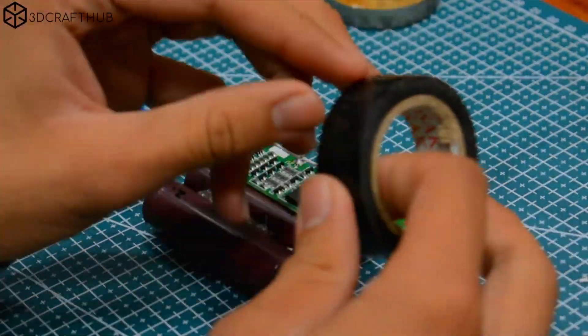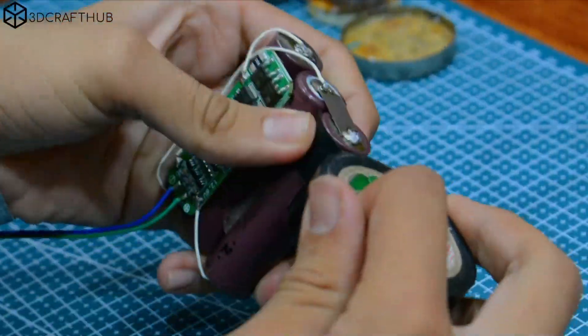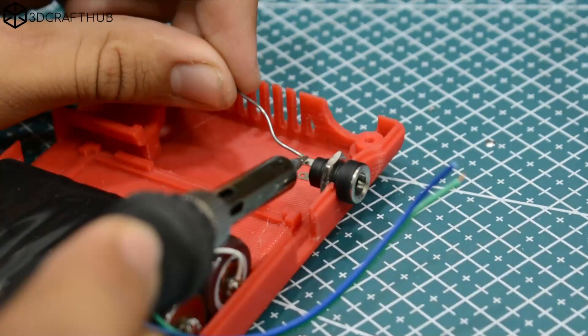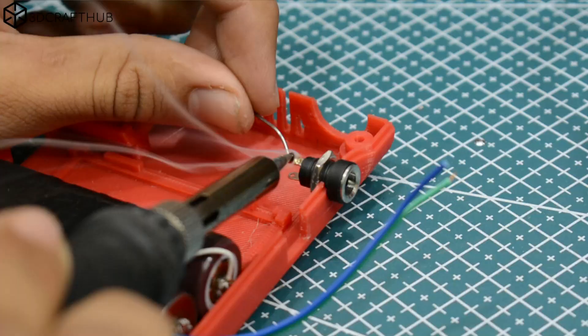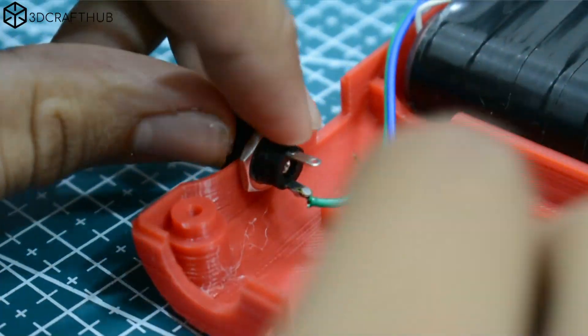This tiny component is the key to making our power bank both safe and reliable. It's assembly time. The main board goes in, the charging port gets wired up, and our battery pack finds its home.